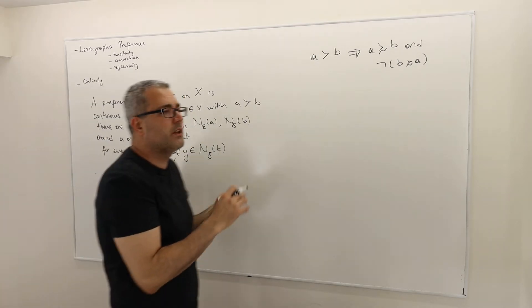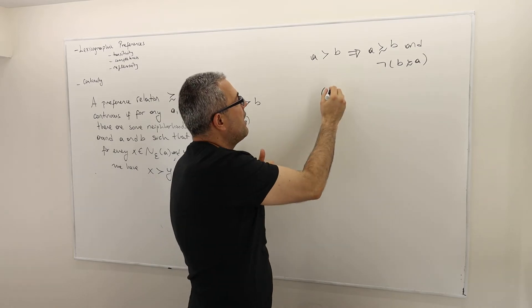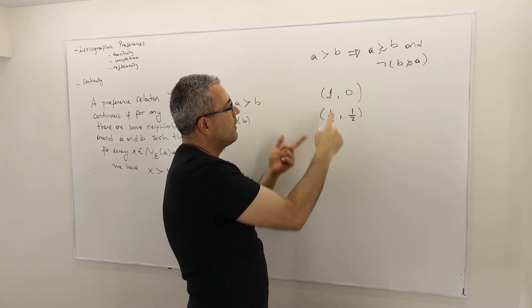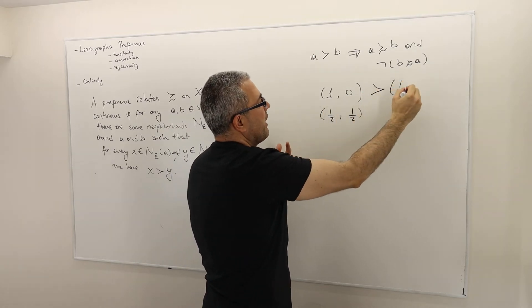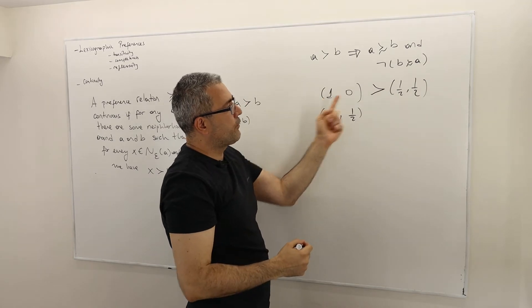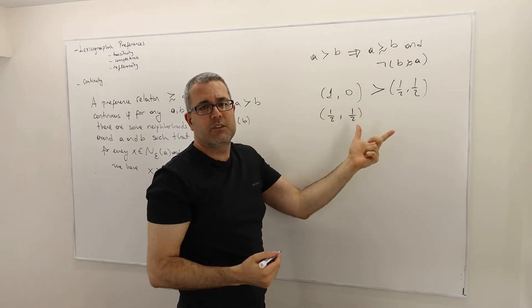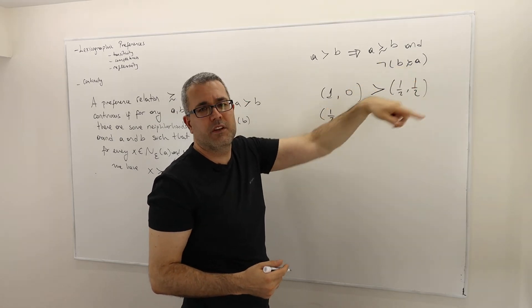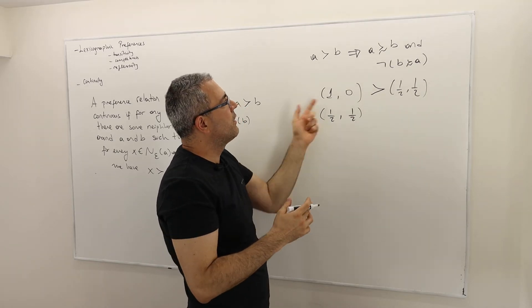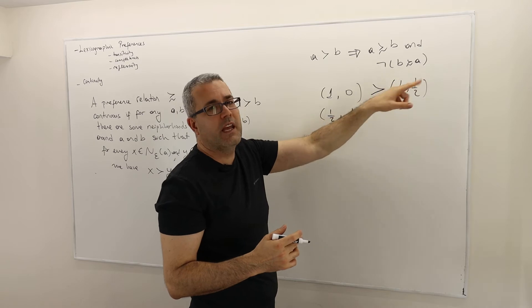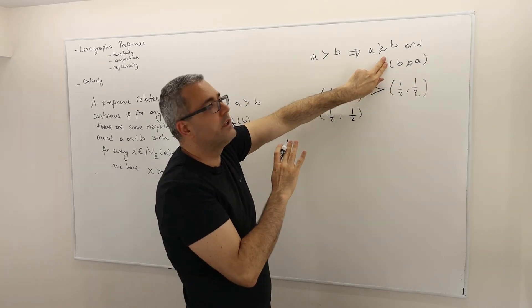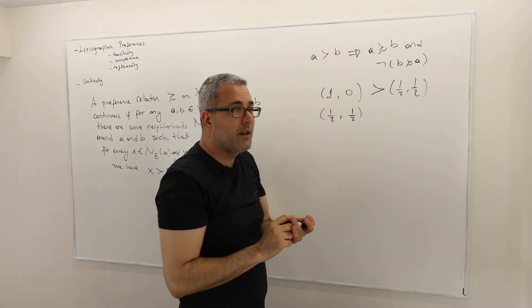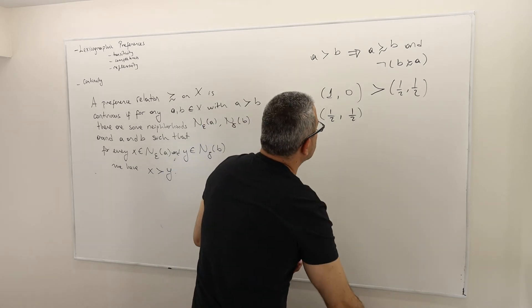For example, if we look at the lexicographic preferences, consider (1, 0) versus (1, 1). So (1, 0) is strictly at least as good as (1, 1). Why is that? Because the first component is strictly higher, so it's at least as good as. And (1, 1) is not at least as good as (1, 0) — meaning, not B at least as good as A is true. If you ignore the negation, this part is false. So therefore, it is a strict part of the lexicographic preference relation.